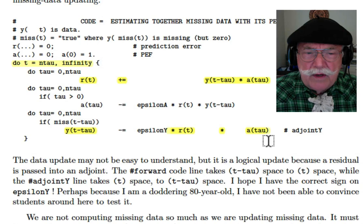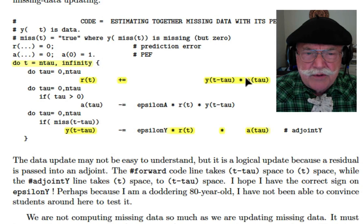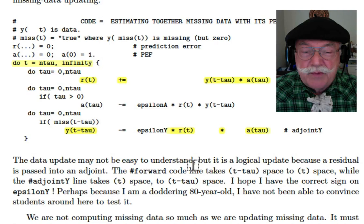You have to look and make sure that I've written the adjoint of the first line. This first line has two adjoints, one for updating the filter and the other is for updating the data. So why do we know that this is the adjoint? Well, the output is the residual in time space, and here the input is residual in time space. And here the input is a function of t minus tau, and here the output is a function of t minus tau. So we know that the operation is a transpose. And in fact, the operator is the filter. So this data update may not be easy to understand, but it's a logical update because the residual is passed into the adjoint.